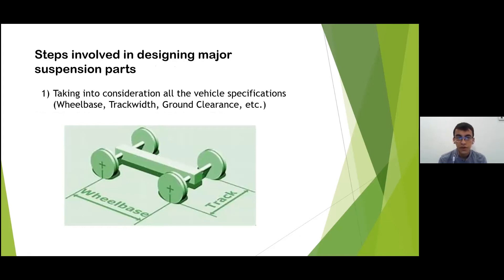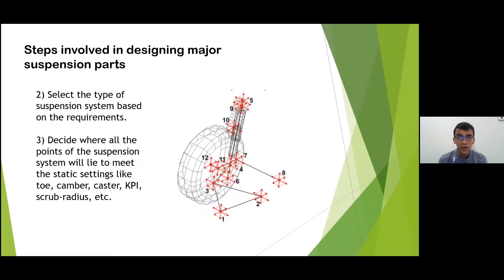Now we look into the steps involved in designing major suspension parts. To begin with we need to take into consideration all the vehicle specifications like wheelbase, track width, ground clearance and various other parameters. Then we can decide the type of suspension we are going to use. After that we will decide the hard points of the suspension system as they will decide the static settings like toe, camber, caster, kingpin inclination, scrub radius, mechanical trail, etc.